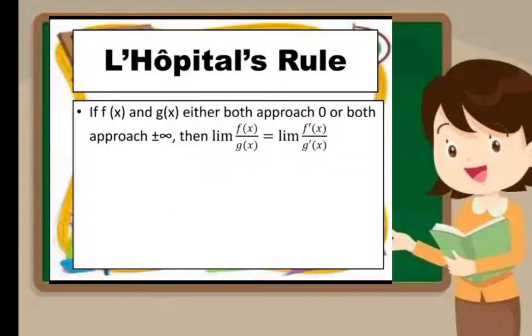L'Hôpital's rule: if f(x) and g(x) either both approach 0 or both approach positive and negative infinity, then the limit of f(x) over g(x) is equal to the limit of f'(x) over g'(x).